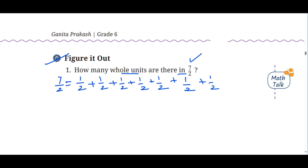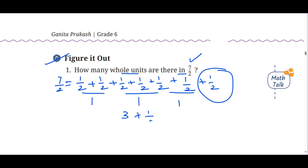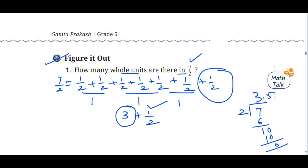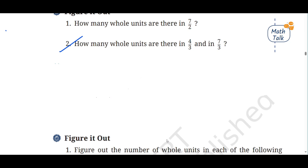In 7 upon 2, we have 7 halves. When we combine 2 halves we get 1; again 2 halves give 1; and again 2 halves give 1 — that's 3 whole units — with 1 half remaining. So 7 upon 2 equals 3 and 1 half. We can also do this using the division method.